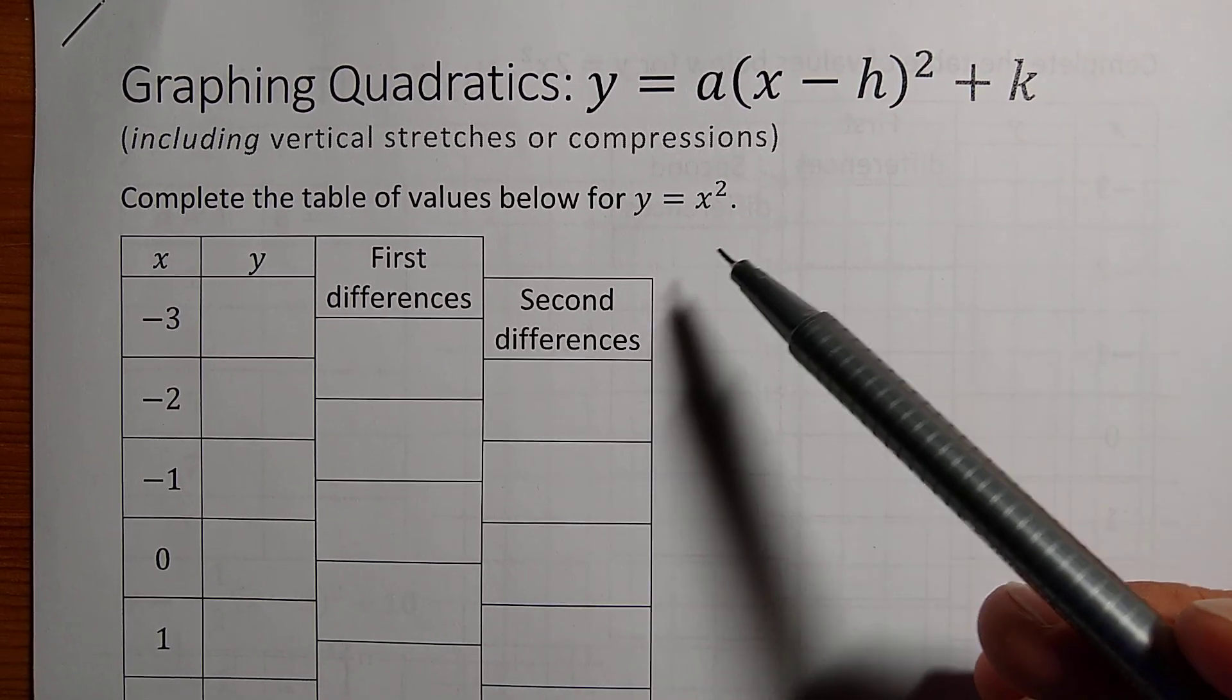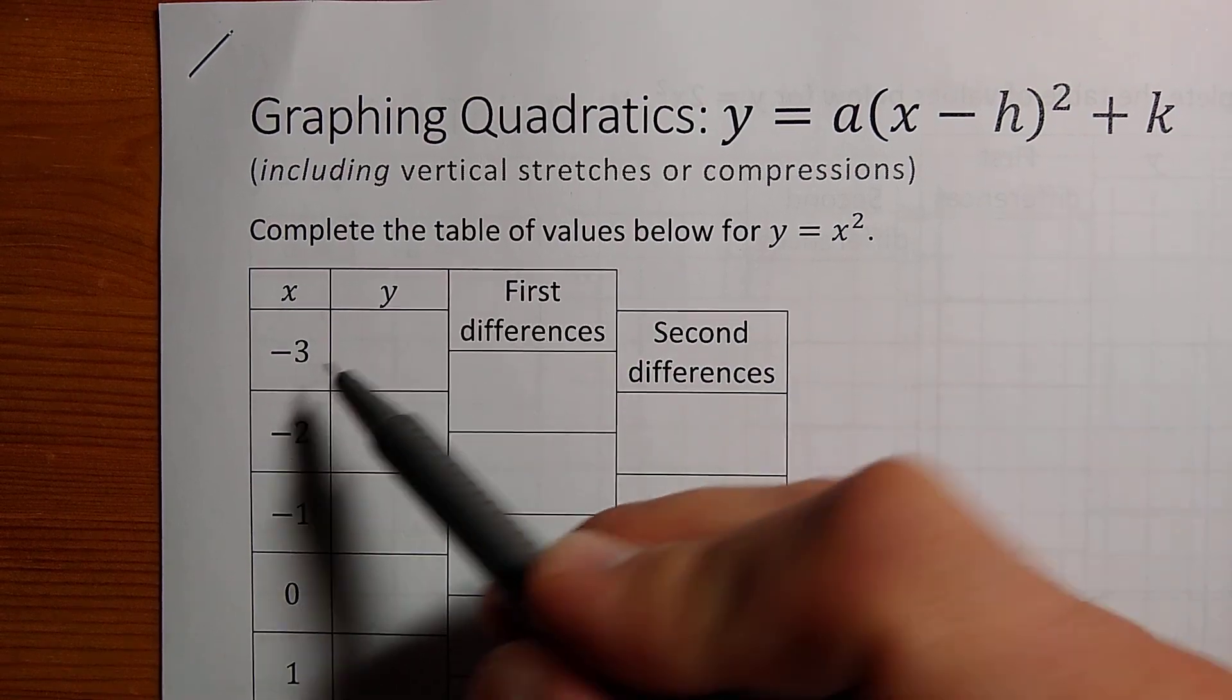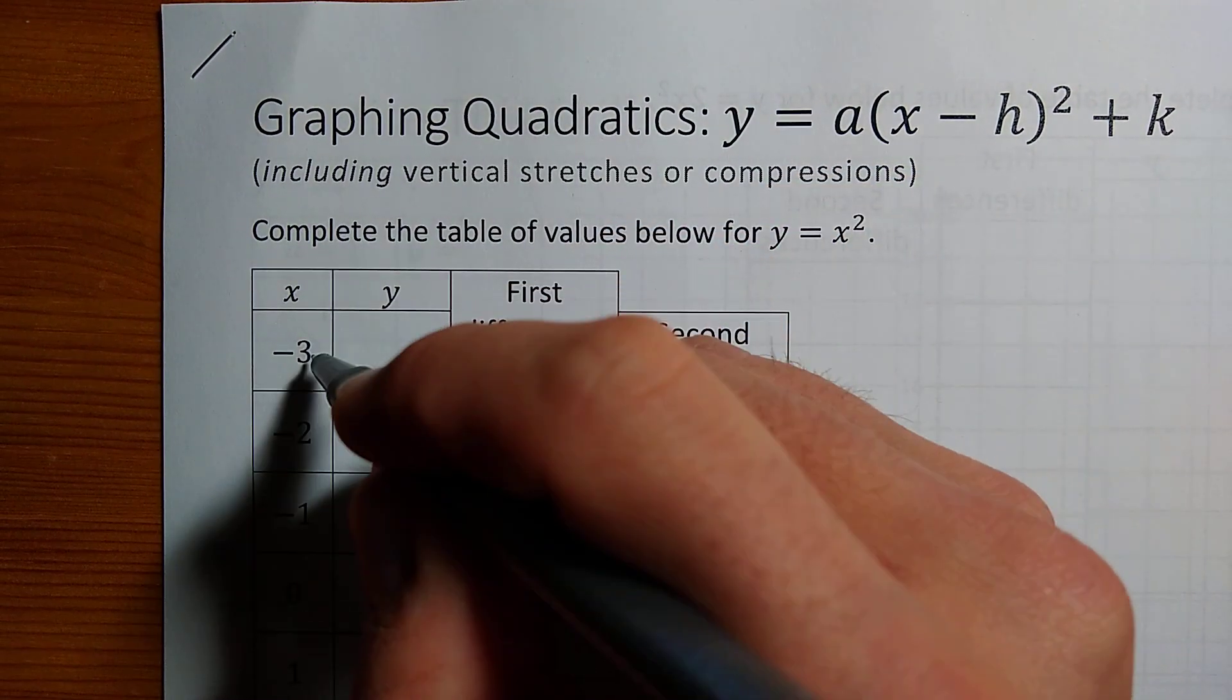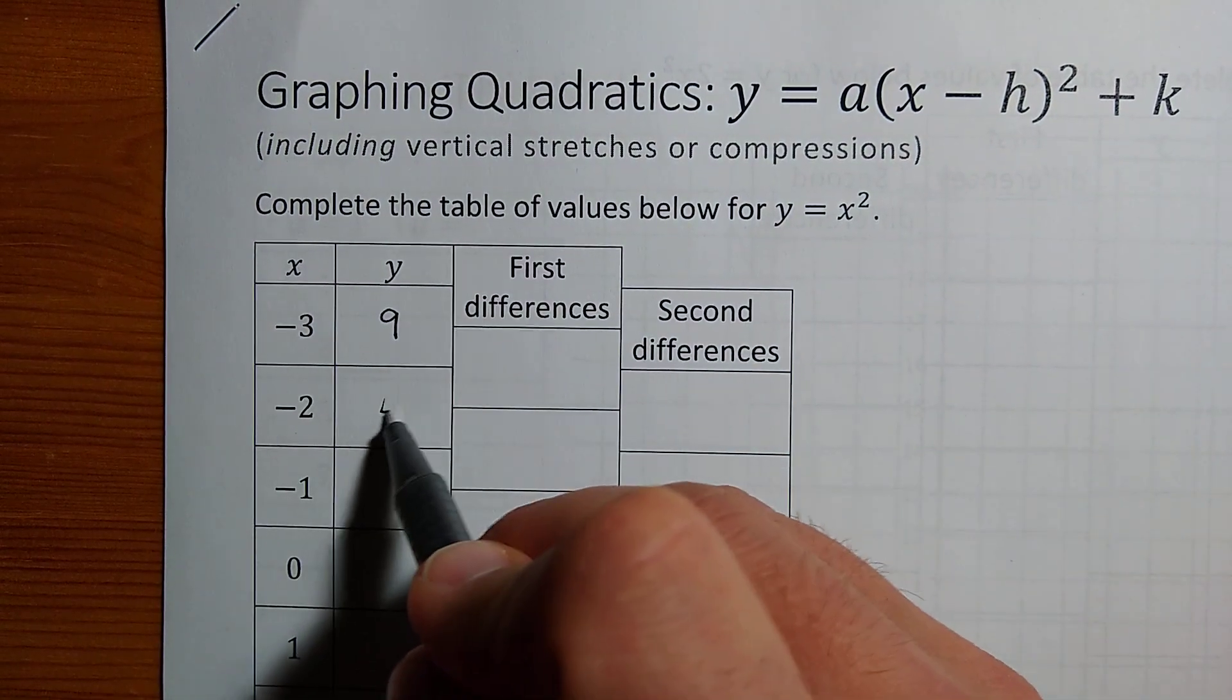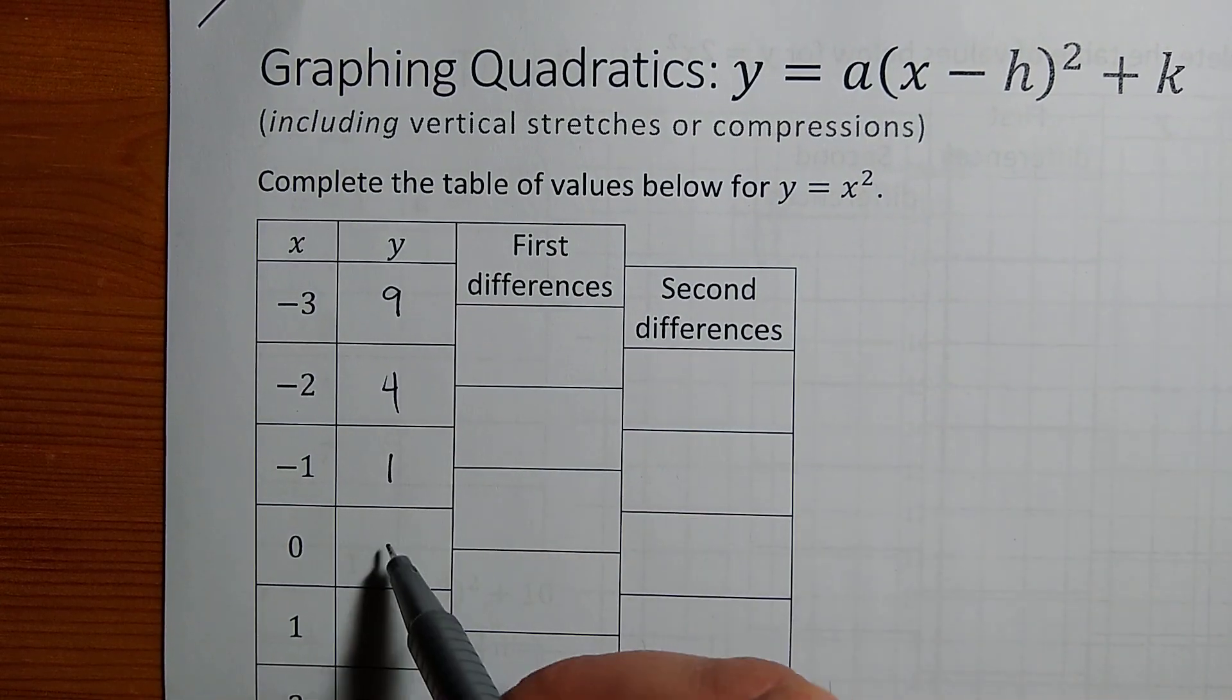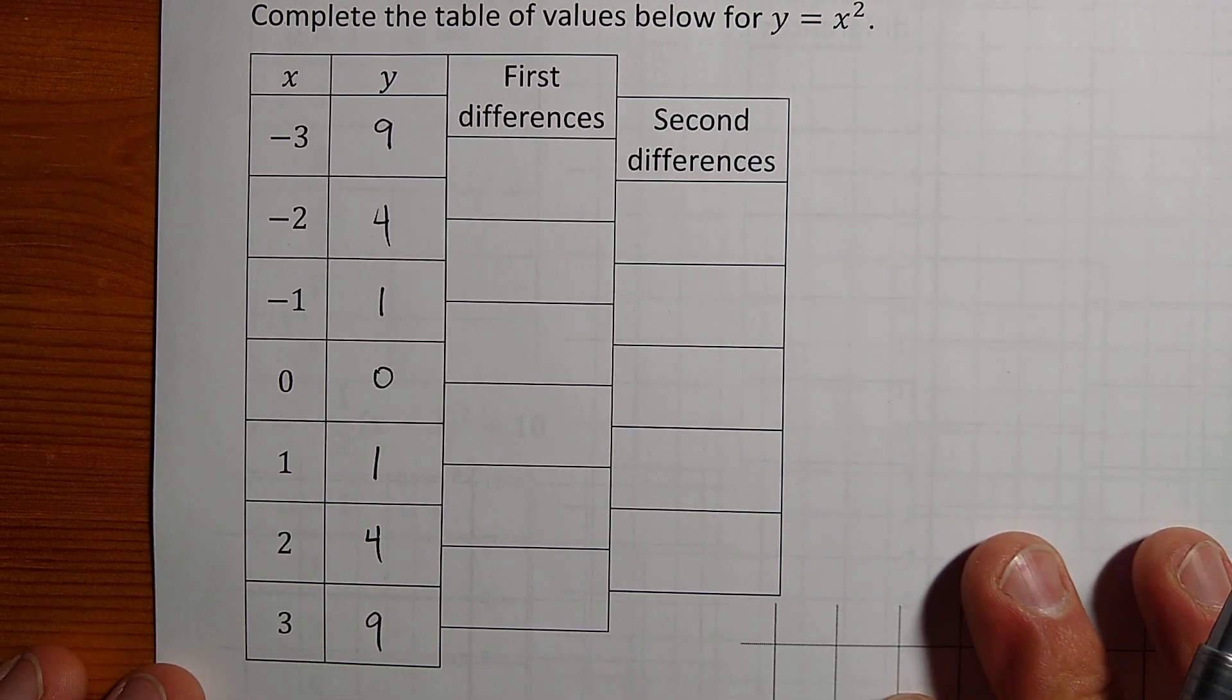So let's look at the table of values for y equals x squared, and we've done this before if you're in my class. When x is negative 3, x squared is going to be negative 3 times negative 3, which is positive 9. For negative 2, we have 4. For negative 1, it's 1, and then 0, and this pattern repeats.